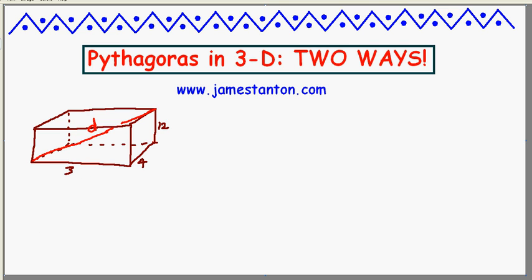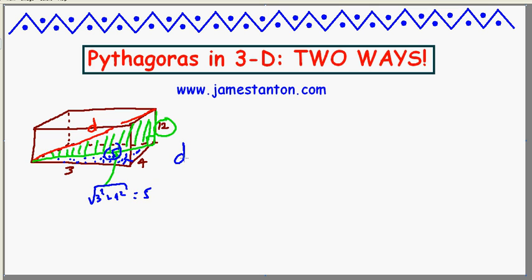Well, this really is a three-dimensional version of Pythagoras' theorem in the following sense. I can get to this result by looking at a right triangle sitting in the interior of this box. I know this right triangle has height 12, but I need to know the length of its base. That's easy to work out because that itself is part of a flat right triangle sitting on the bottom of the box. So I can work out this length: it would be the square root, by Pythagoras, of 3 squared plus 4 squared. I chose nice numbers — that's 5 — which means d would be the square root of 5 squared plus 12 squared. I chose really nice numbers: that's the square root of 169, which is 13. So this length is 13, which is really computed by doing Pythagoras' theorem twice.